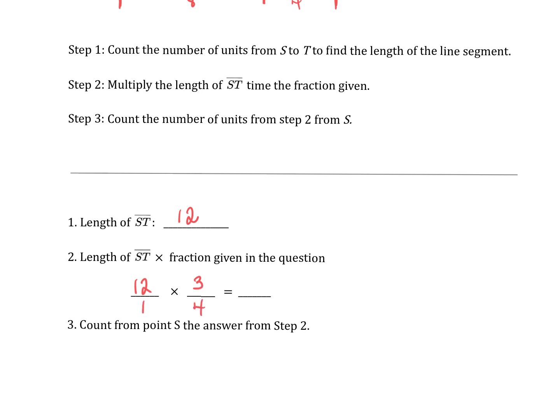If we multiply a whole number times a fraction, we can put it over 1. And when we multiply, we multiply straight across. So 12 times 3 is 36. 1 times 4 is 4. And 36 divided by 4 happens to be 9. So 9 units represents 3 fourths, or 75%, of the total length of 12.